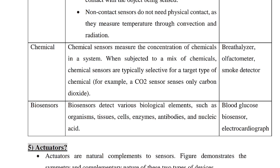Biosensors detect various biological elements such as organisms, tissue cells, enzymes, antibodies, and nucleic acids. They use biological elements like organs, cells, and tissues. Examples include blood glucose biosensors and electrocardiographs.